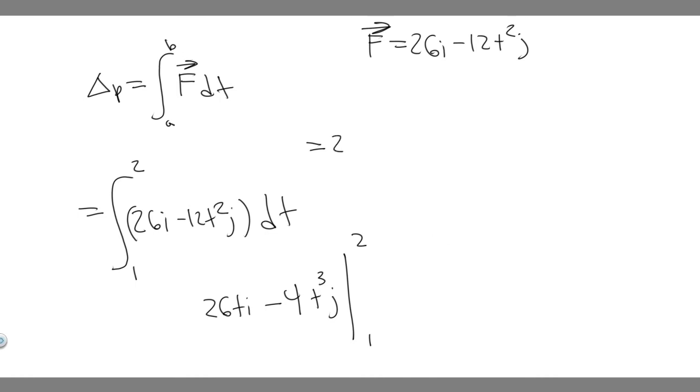you're going to get 26 times 2i minus 4 times 2 cubed j. This essentially is just going to be 52i minus 2 cubed is 8, this is going to be 32j. That's going to be our value here, and then we minus whatever one plugged in is.